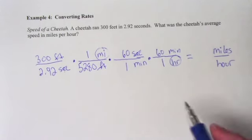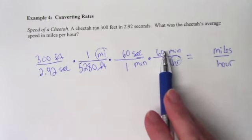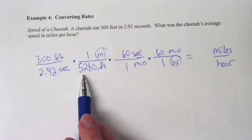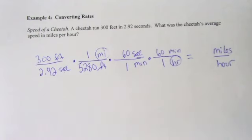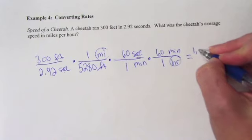So what we need to do is just go through, we need to multiply 300 times 60 times 60, get our answer, then divide it by 2.92 times 5,280. So I'm going to look at the top right now. We have 300 times 60 times 60. That gives us 1,080,000.